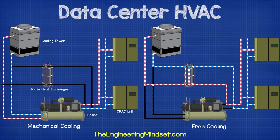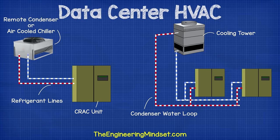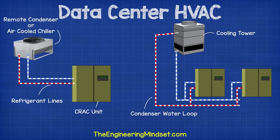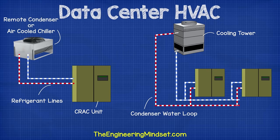Some systems then use the chillers as backup if the cooling towers are unable to reach the set point. Some CRAC units contain their own small individual refrigeration system which either uses a remote dry air cooler or dumps heat into a condenser water system. If a condenser system is used, you'll often find a free cooler connected to the system or sometimes built into the chillers. This allows the heat to be removed with minimal use of the compressor, using just the fans to blow cooler ambient air across the condenser which removes the heat.